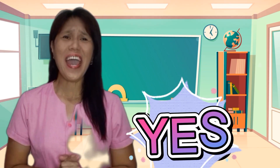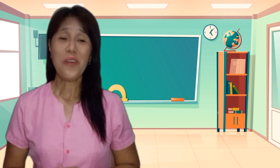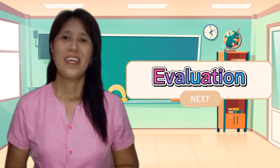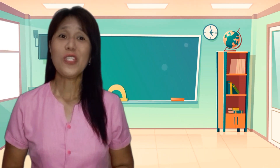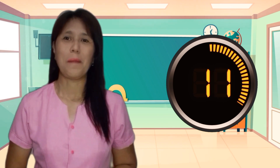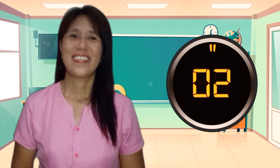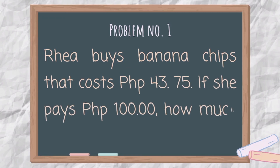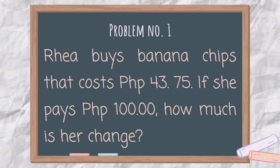Are all your answers correct? That's great! You are now ready for the evaluation. Prepare your paper and pen. In the evaluation, you need to read, analyze, and answer the problem — just give your final answer. I will give you 20 seconds for each problem. Here's problem number 1: Rinya buys banana chips that cost 43 pesos and 75 centavos. If she pays 100 pesos, how much is her change?